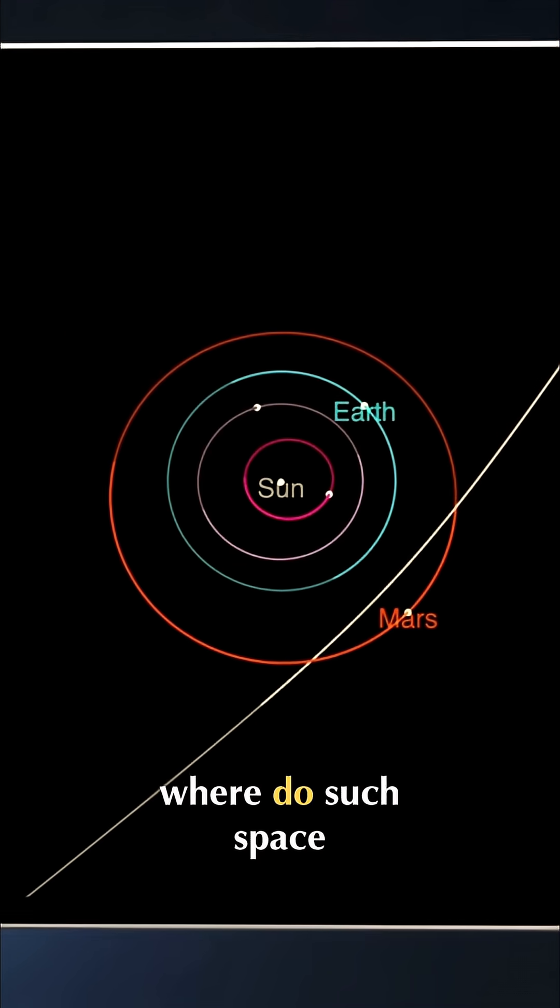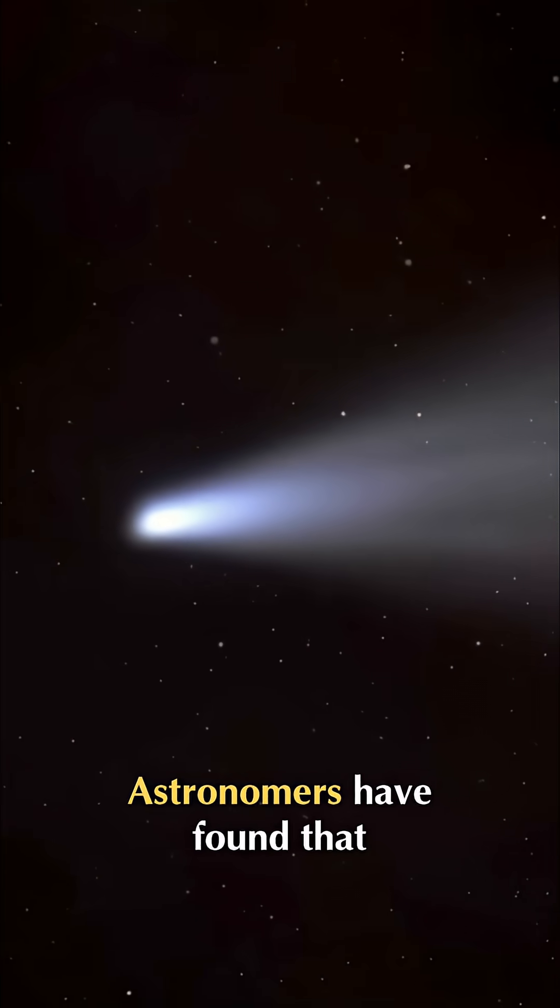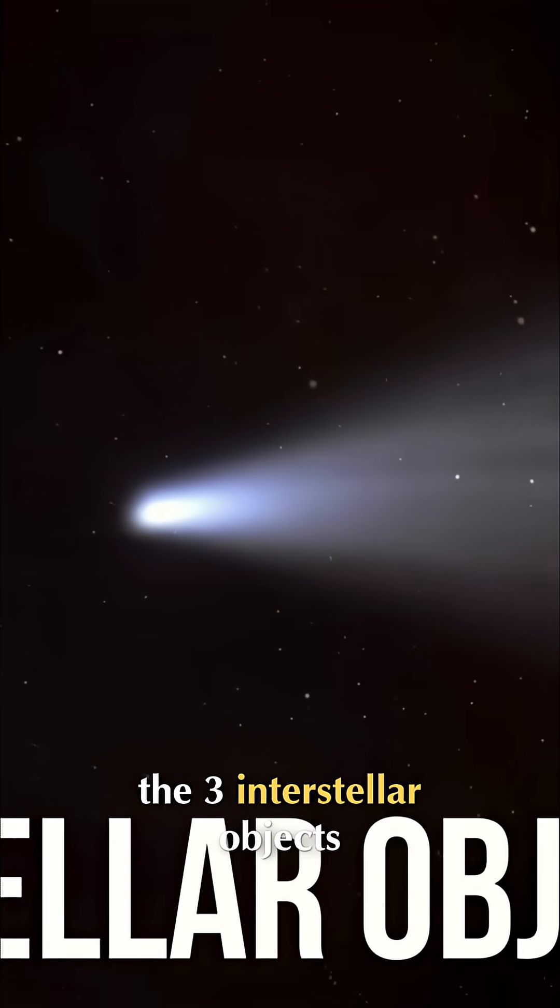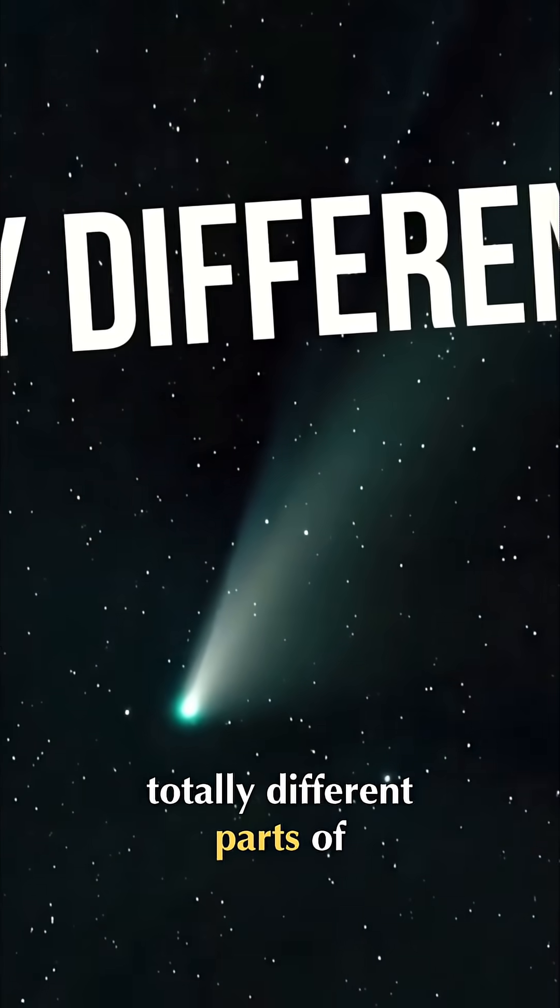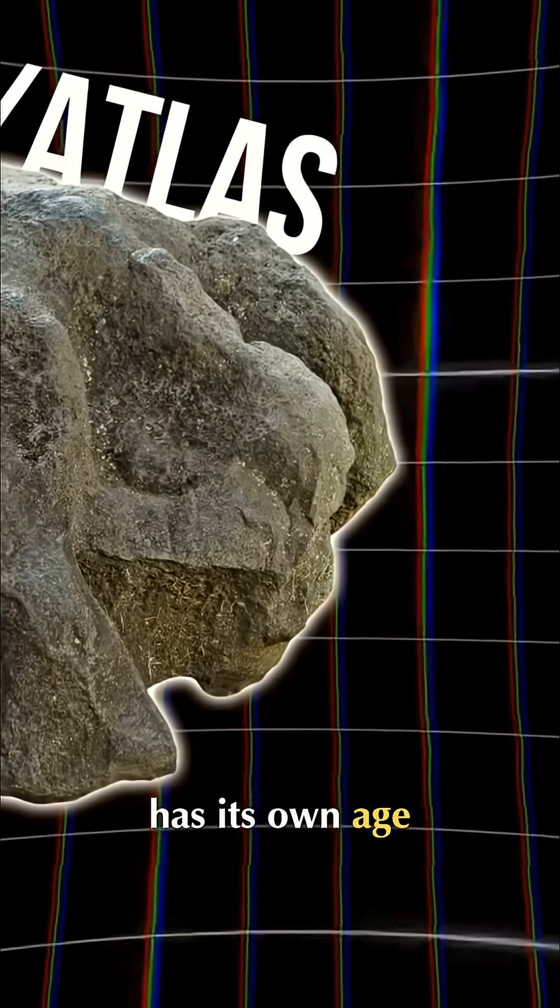So, the question is, where do such space visitors come from? Astronomers have found that the three interstellar objects we discovered came from totally different parts of the galaxy, and each of them has its own age and background.